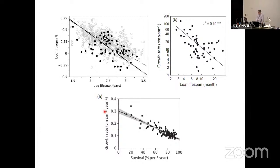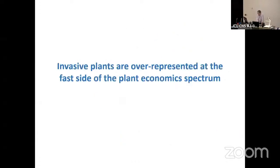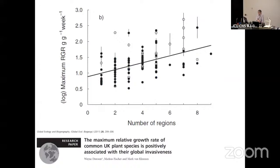The way physiologists have been able to link all this is really very interesting. Going over the full review: clarifying what the plant economic spectrum is, with a few examples — invasives are over-represented on the fast side. This example for UK plants shows how many regions a species has established across the world; the more regions, the more successfully invasive. The most successful were the ones having higher growth rates — again on the fast side of the spectrum.